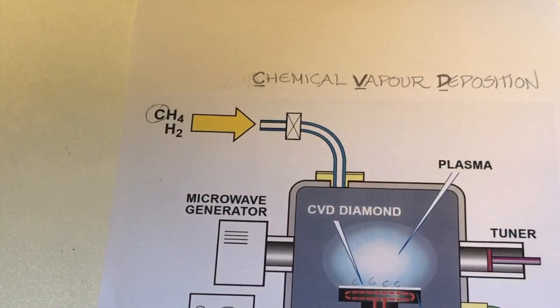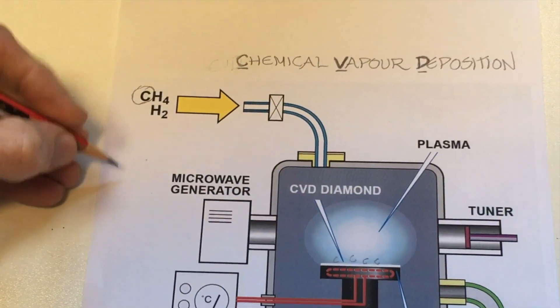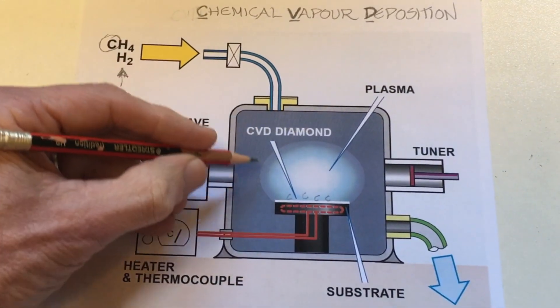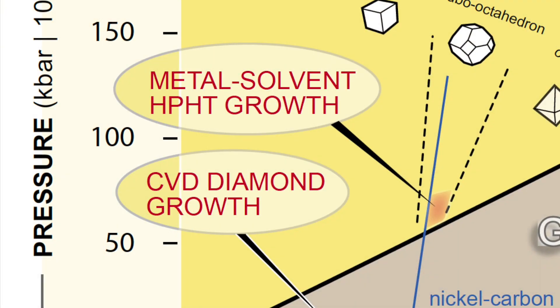So, what's the hydrogen for? The hydrogen etches away the graphite that tends to be formed because the pressure inside the chamber is below that for which diamond is stable.